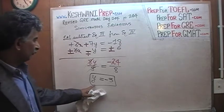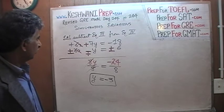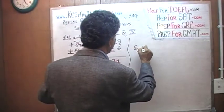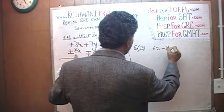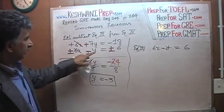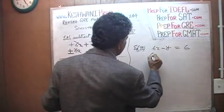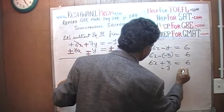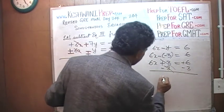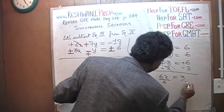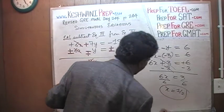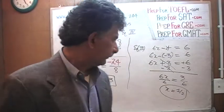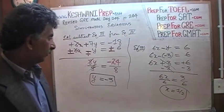Now to find X, we simply plug in the value of Y into one of the equations and solve for X. Let's work with equation number 3: 6X minus Y equals 6. Let Y equal negative 3: 6X minus negative 3 equals 6, which gives us 6X plus 3 equals 6. Subtract 3 from both sides — 6X equals 3 — divide by 6, so X equals one half.